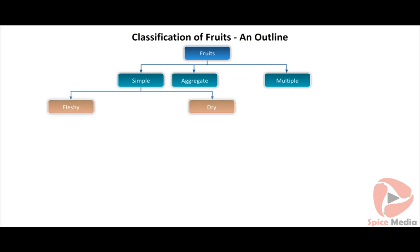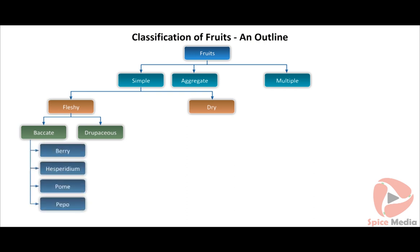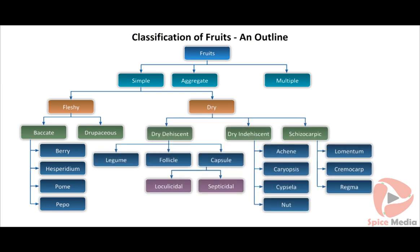Simple fruits are classified into simple fleshy fruits and simple dry fruits. Simple fleshy fruits are again classified into baccate and drupaceous. Baccate is further classified as berry, hesperidium, pome, and pepo. Dry fruits are classified as dry dehiscent, dry indehiscent, and schizocarpic. There are two types of multiple fruits: sorosus and psychonus.